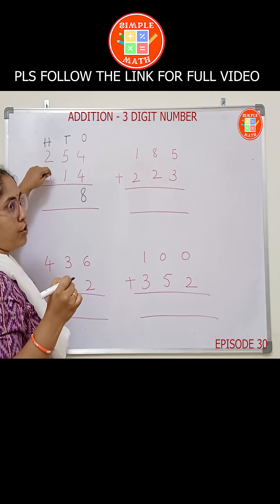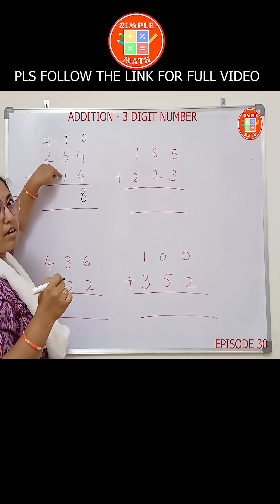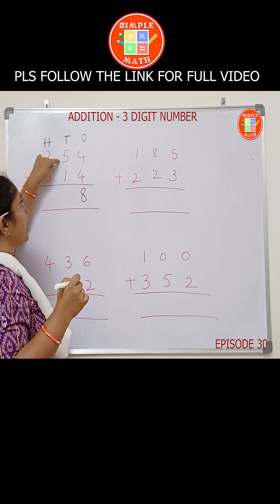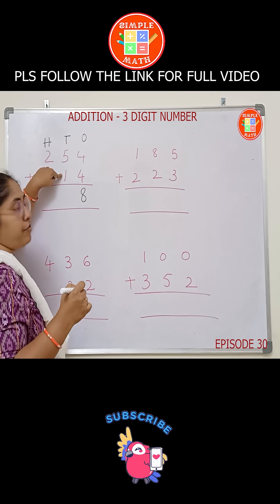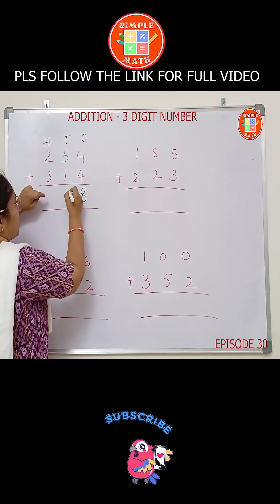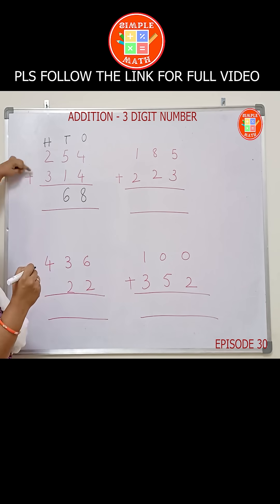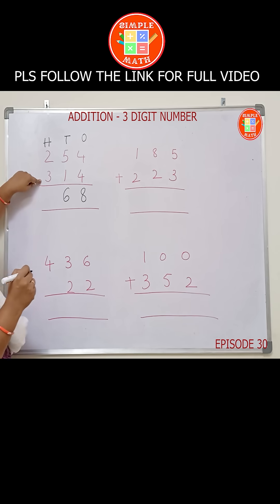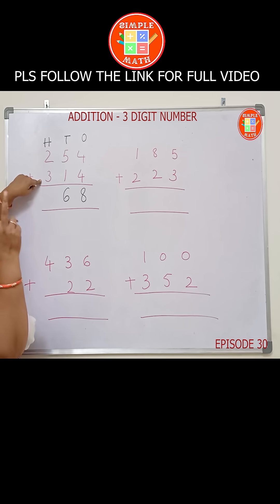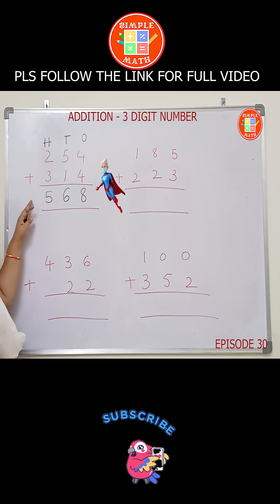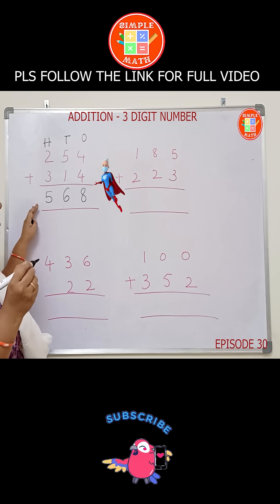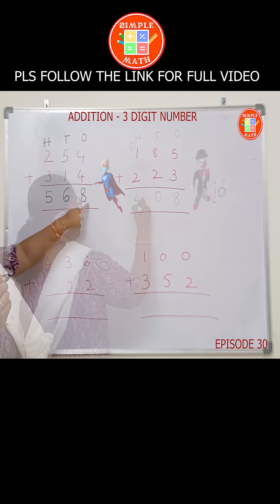When you add 1 to any number, you get the next number. So 5 plus 1: what is the number after 5? 6. So write 6. Now 2 plus 3: 3 is bigger, so 3 in your mind, 2 on your fingers, count after 3 — 4, 5. The number formed is 568.